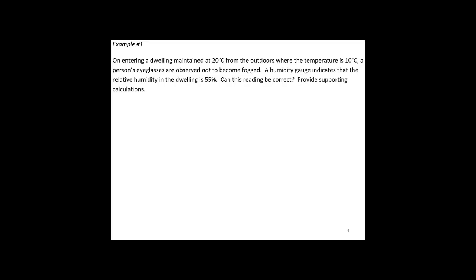In this first example, we're going to take the information we just learned about the dew point and apply it. On entering a dwelling maintained at 20°C from the outdoors, where the temperature is 10°C, a person's eyeglasses are observed not to become fogged. The idea here is that the eyeglasses are at the same temperature as the outdoors, so they come in at 10°C. A humidity gauge indicates that the relative humidity in the dwelling is 55%. Can this reading be correct? Provide supporting calculations.